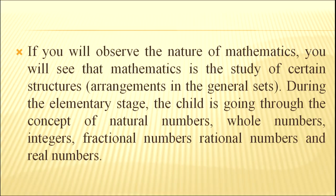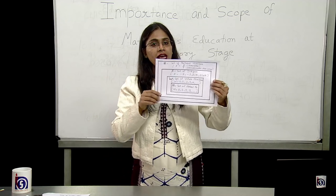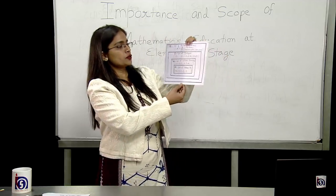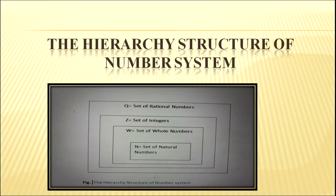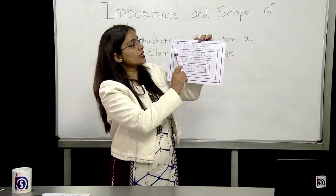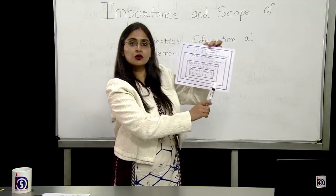During the elementary stage, the child goes through the concepts of natural numbers, whole numbers, integers, fractional numbers, rational numbers and real numbers. Here I have a teaching aid related to the content. The first box represents the set of natural numbers. The second box represents the set of whole numbers. The third one shows the set of integers. And the last one shows the set of rational numbers. Rational numbers are in the form of P by Q, where P is the numerator and Q is the denominator, which is non-zero.